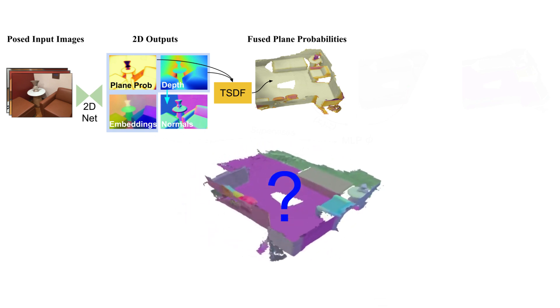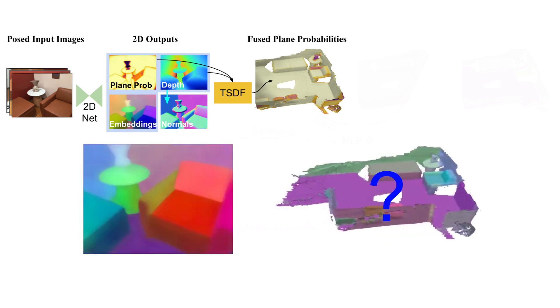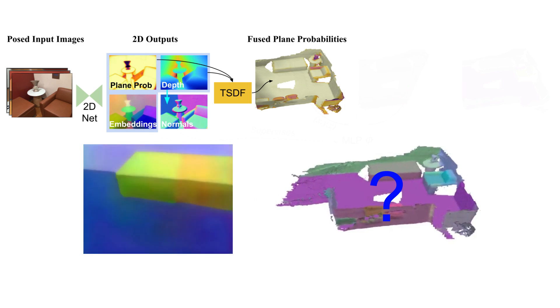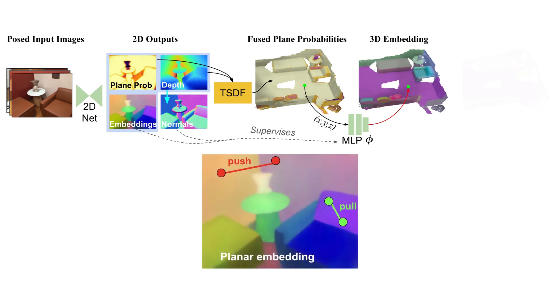However, this is not straightforward because the 2D planar embeddings are not consistent across images. This can be seen in the video, where we observe the embeddings — depicted as colour — changing across the different time steps. To overcome this issue, we introduce a per-scene MLP that assigns an embedding vector to each 3D vertex in the mesh. This MLP is supervised by the predicted per-image embeddings and the estimated normal map using a push-pull loss.